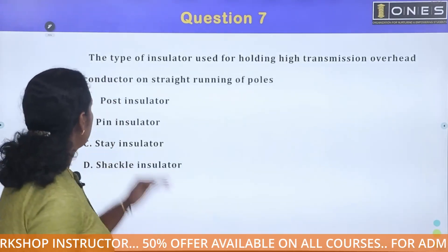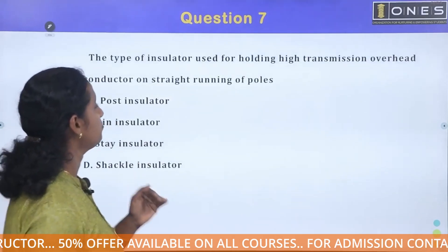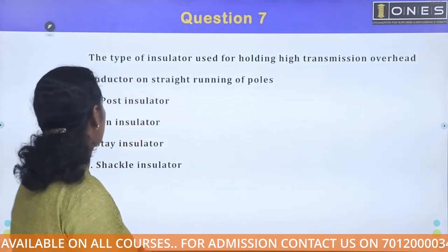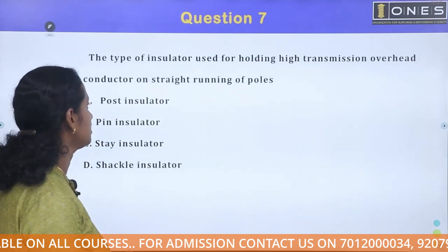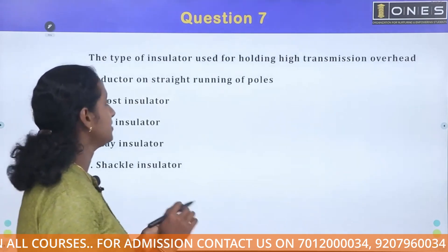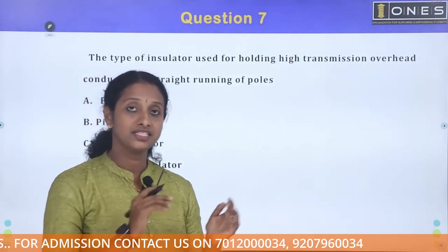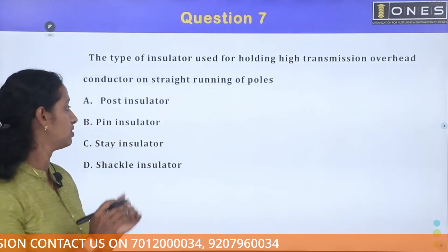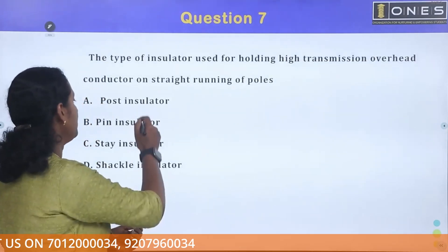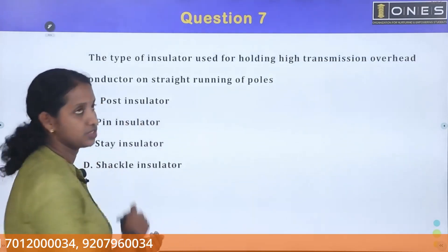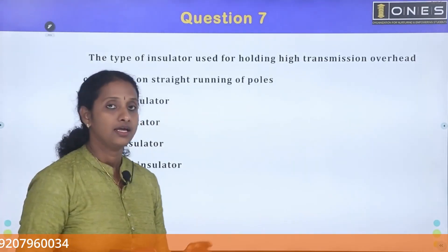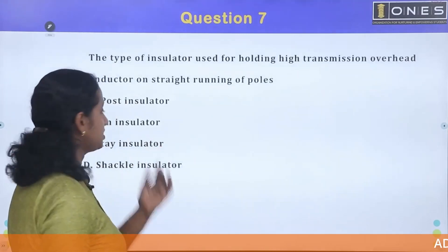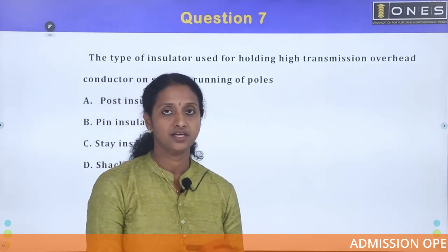The type of insulator used for holding high transmission line overhead conductors on straight running poles. The options are: pin insulator and post insulator, shackle insulator, and stay insulator.